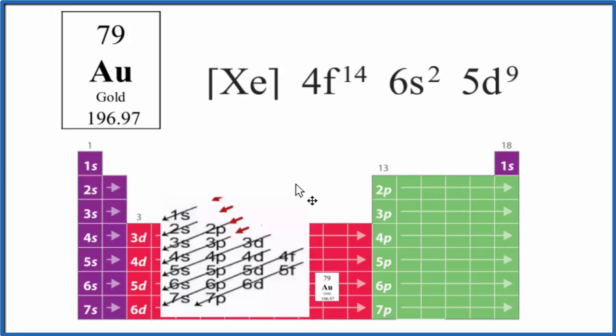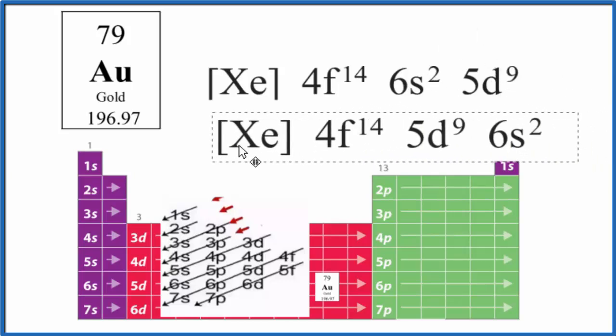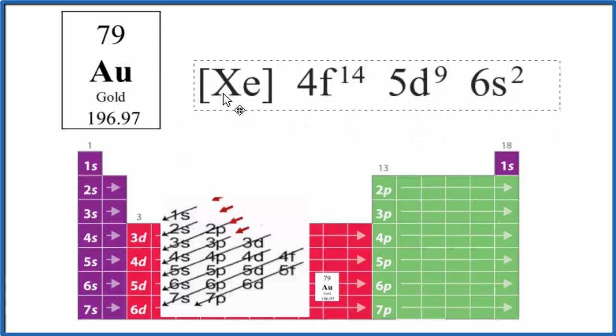Often for these transition metals here, we'll put the 6S last, so we flip the 5D9 and the 6S2. So let's flip those to get this. That helps some, but this still is not the correct electron configuration for gold, and here's why.